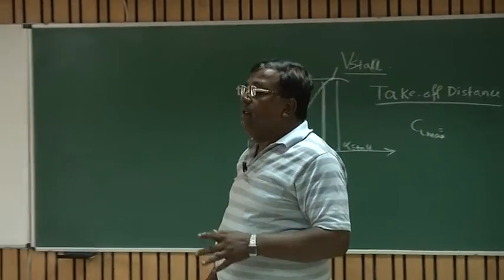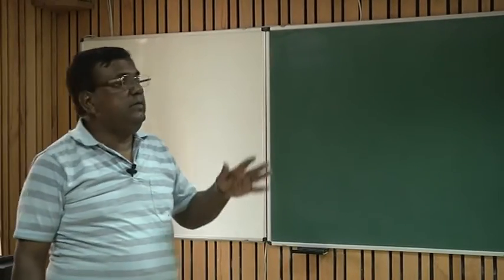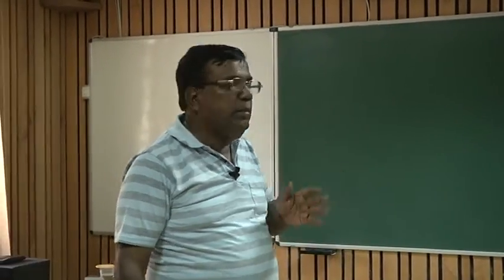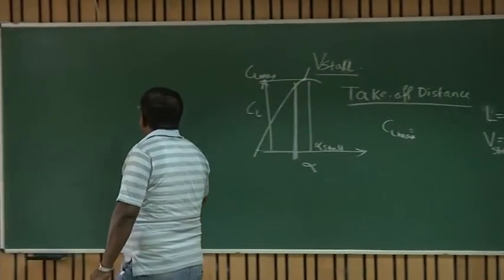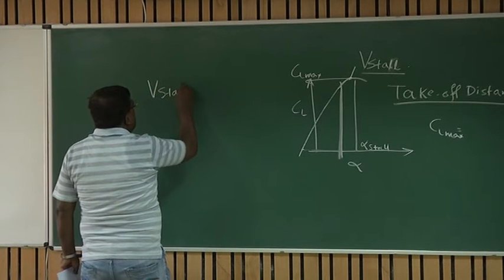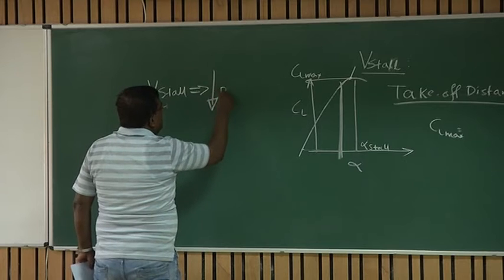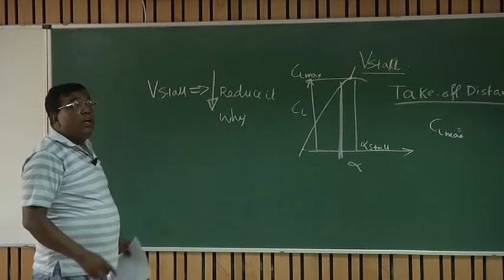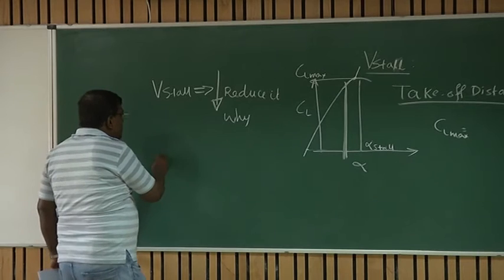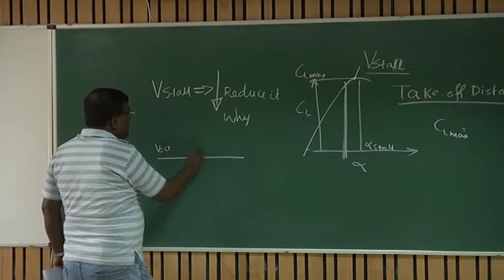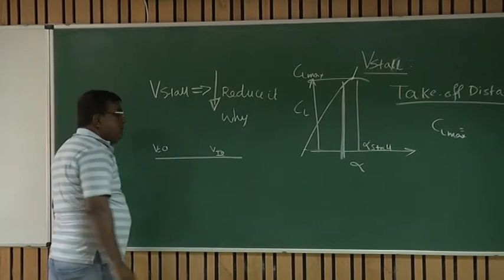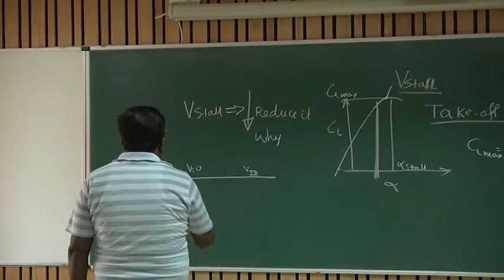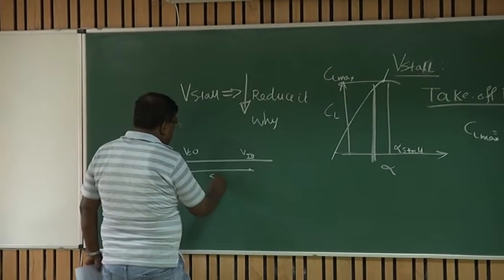But I repeat again, the pilot will not like to fly at that C_L max. Because if there is slight disturbance, he may dip into a stall. So he will be flying a little less, maybe 20 percent less than C_L max, which is practical. So if I want to reduce takeoff distance, why should I reduce? Because we are talking about takeoff. That is, I am starting from V equals 0 to V takeoff. It will be 10 to 20 percent more than the V stall and it goes up.